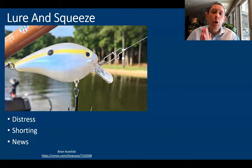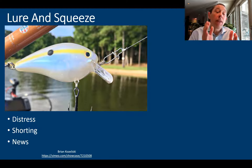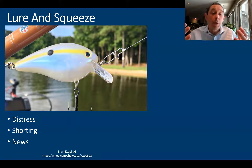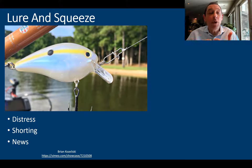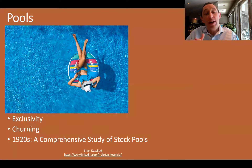Lure and squeeze happens when there's a distressed company out there — they're barely hanging on, they need a capital infusion, it looks really bad. So other investors start shorting these shares, and as the price gets lower and lower you start buying. Then you put out some news saying they got their capital infusion, put the short squeeze on those people, the stock price rallies, and you're able to sell those shares at a profit.